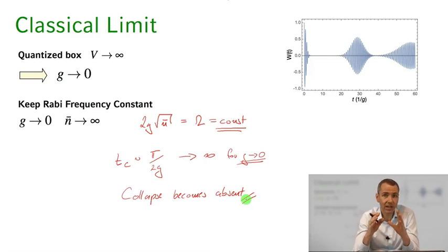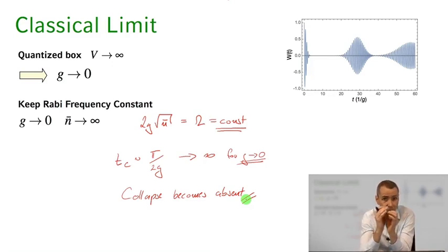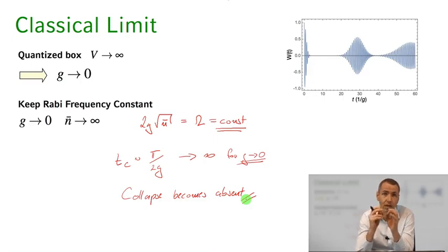This whole phenomenon of collapse and revival of Rabi oscillations really depends on having a finite coupling constant in the system, and therefore the smallest possible box volume to make g as large as possible. In the next class we'll discuss experimental setups in so-called cavity quantum electrodynamics, which make use of this by creating tiny volumes in space where the coupling constant between the light and the atom is very large.